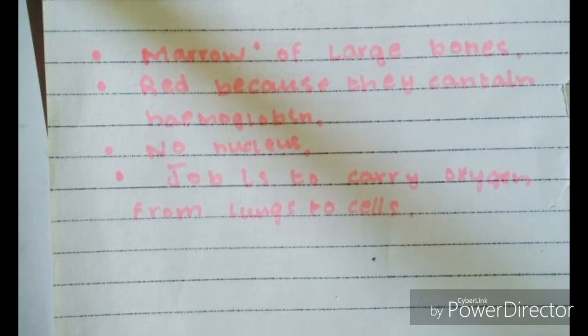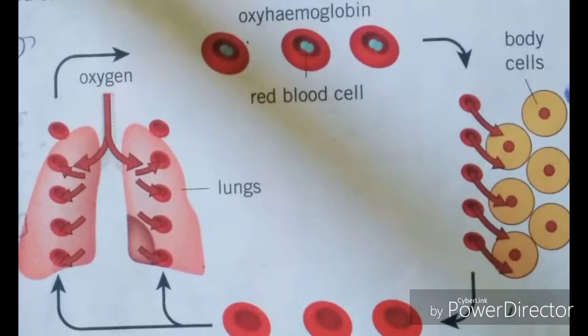Red cells pick up oxygen as blood is pumped through the lungs. Hemoglobin joins with oxygen to make oxyhemoglobin, which is bright red. As it travels around the body, the oxyhemoglobin changes back to hemoglobin, releasing the oxygen to the cells. This is a diagram showing the lungs.